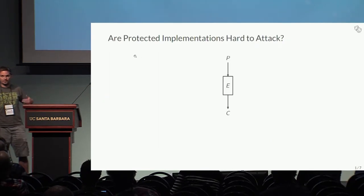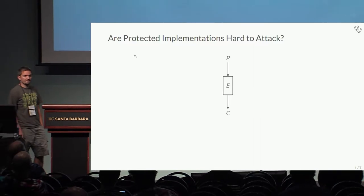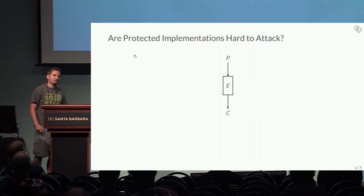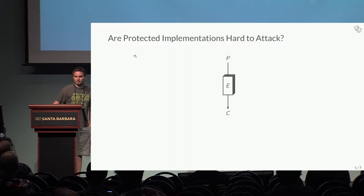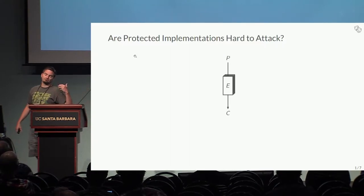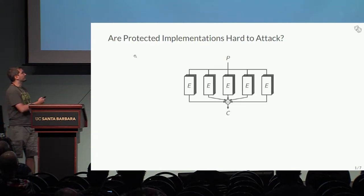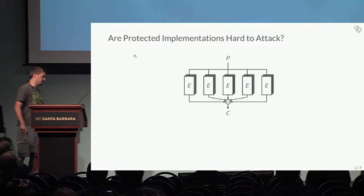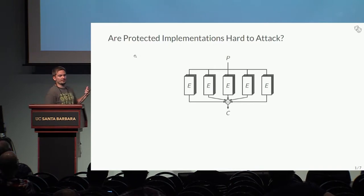Let us assume we want to protect a block cipher against implementation attacks. What can we do? First, we can use masking to protect against side-channel attacks, to force an attacker to use higher-order side-channel attacks, and then we can add redundancy to protect against fault attacks and try to force an attacker to use multiple faults per execution to attack the primitive.